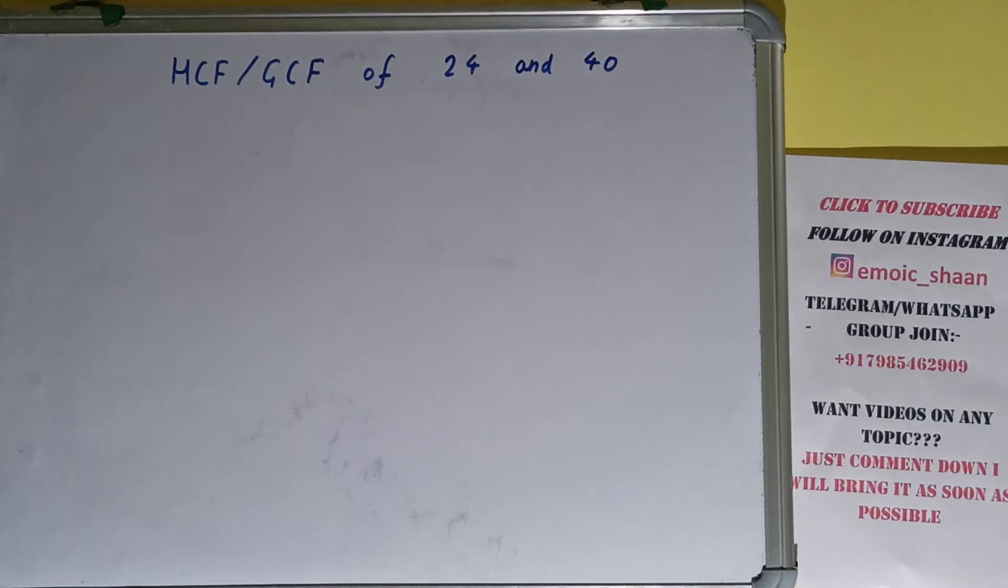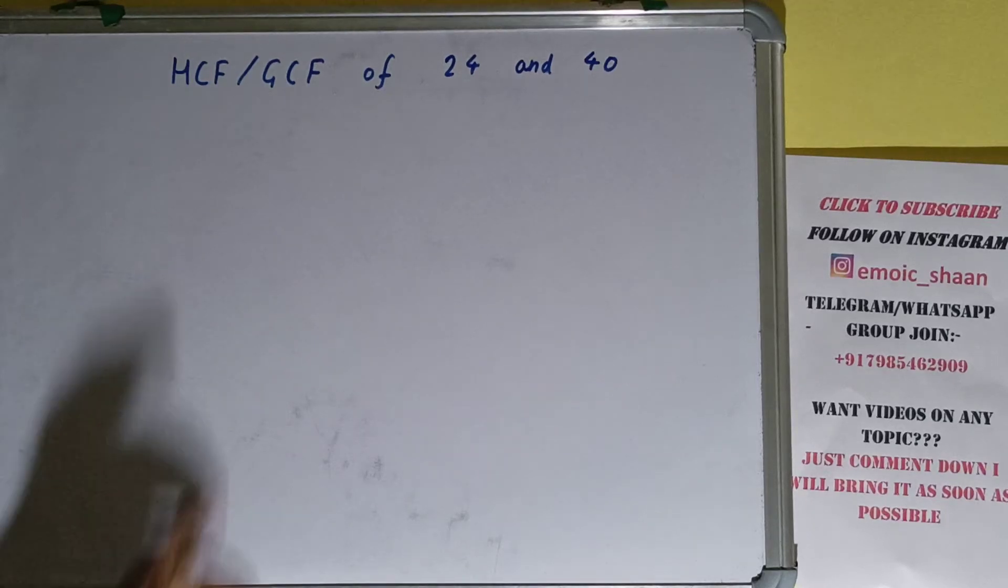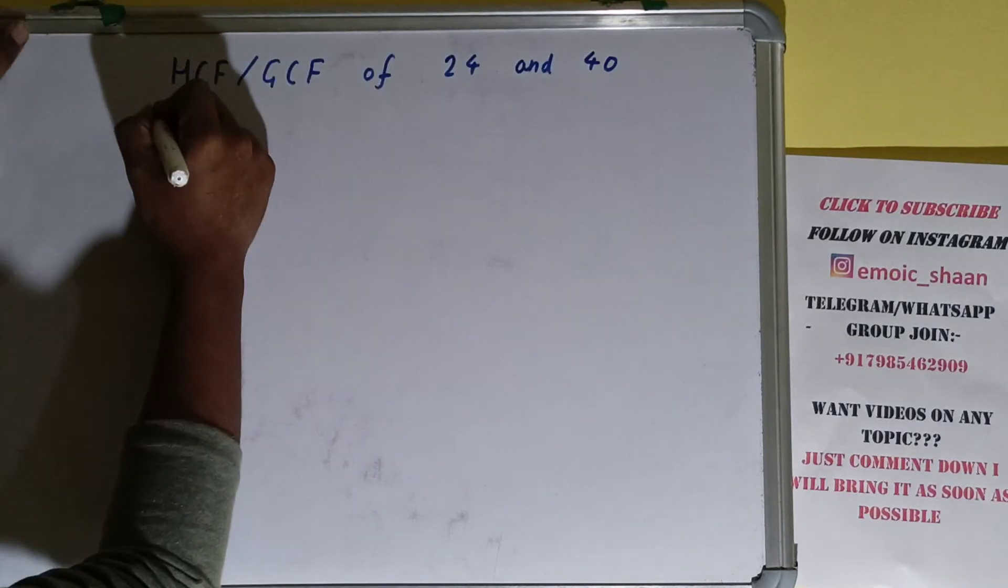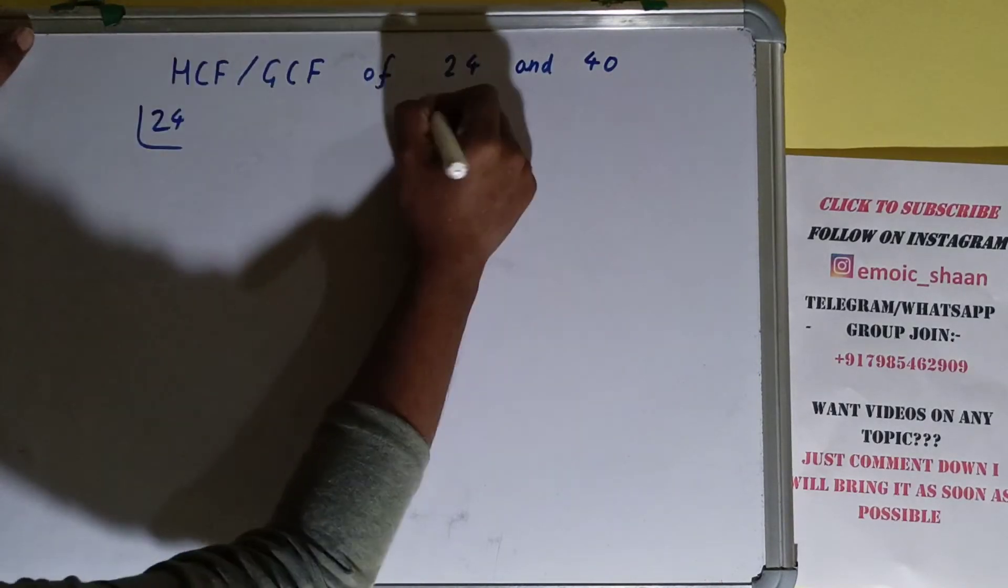Hello friends, in this video I'll be helping you with the HCF or the GCF of the numbers 24 and 40. So let's start. To find it out, we first need to write each of the numbers separately and prime factorize each of them.